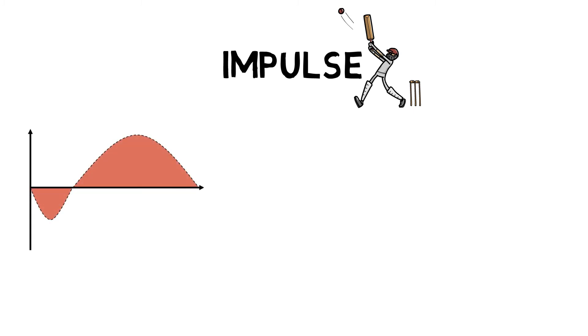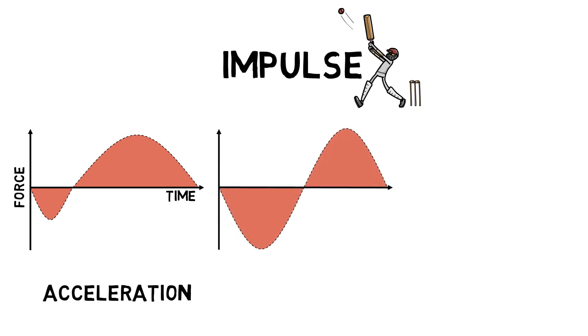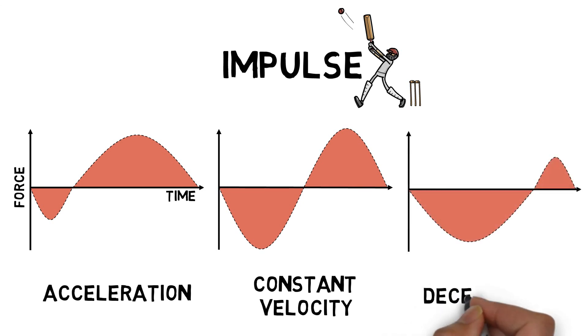Impulses are commonly shown in force time graphs. As a sprinter accelerates over the first 20 metres, there is a positive impulse. When the sprinter reaches constant velocity during the middle of the race, there is zero impulse. And as the sprinter decelerates over the finish line, there is a negative impulse.